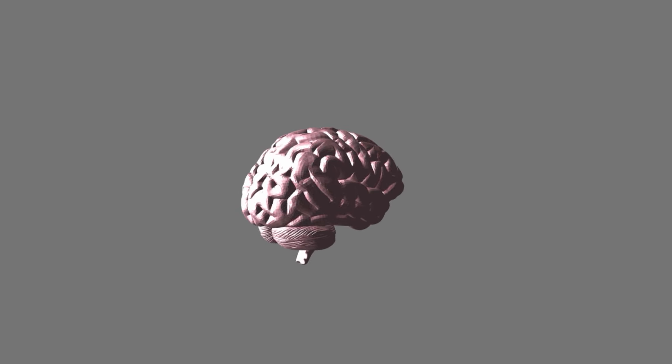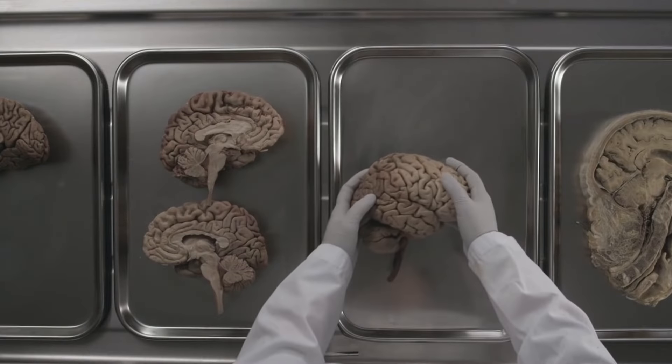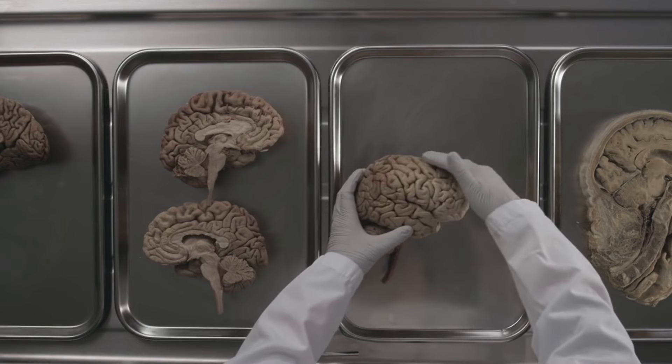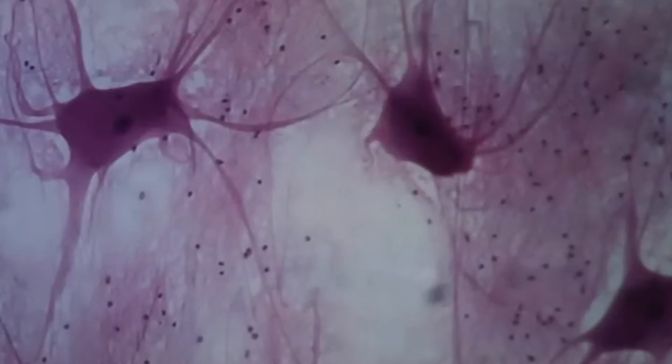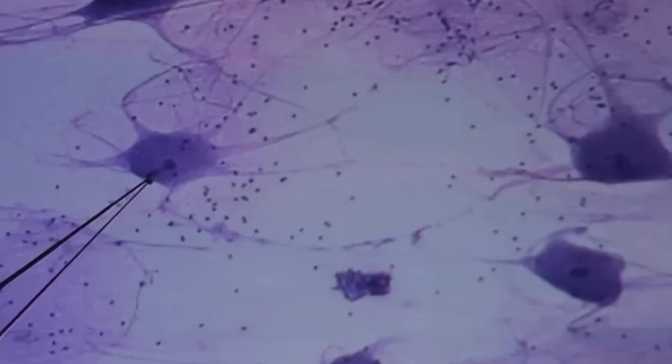Once we as humans honed in on the brain as being associated with the act of thinking, we proceeded to examine it, starting with simple probing and progressing into modern day techniques such as observing the brain under a microscope. Supposedly, the people who have studied these images have picked up on the fact that there are many copies throughout of a specific type of cell structure that they've called a neuron.